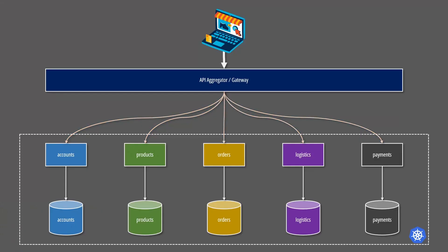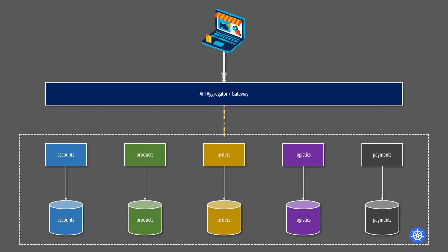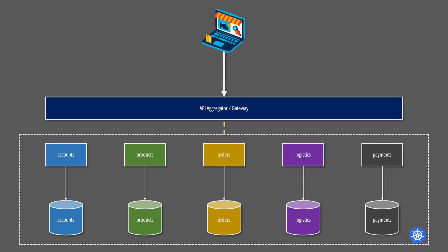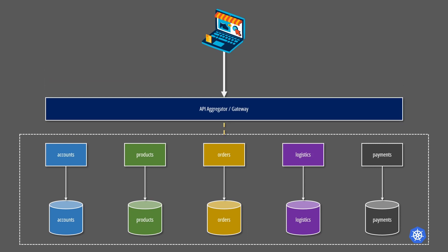To be effective, the gateway needs to be located near the backend to reduce latency as much as possible. Otherwise, we could still end up with poor performance.